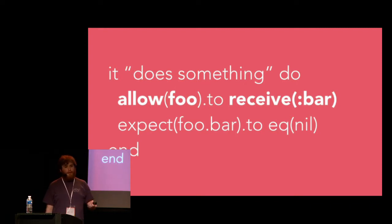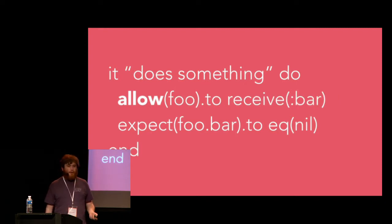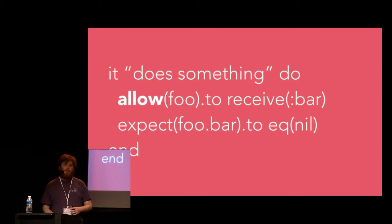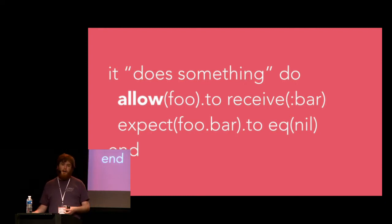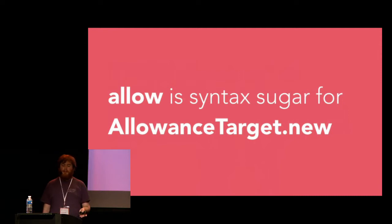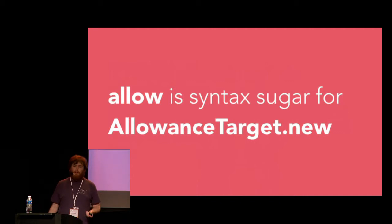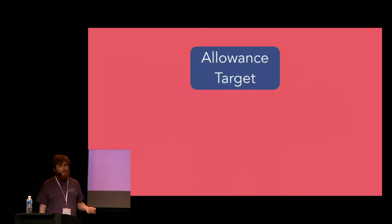Let's look at what allow actually does. In RSpec, many of the methods available inside your tests are simply convenience wrappers around constructing some internal RSpec object. Allow is one of those — it's just syntax sugar for creating an object called an AllowanceTarget. It delegates straight through to AllowanceTarget.new. The AllowanceTarget is a subclass of a class called TargetBase, which is a series of convenience methods for mocking, stubbing, and more complicated message replacement operations.